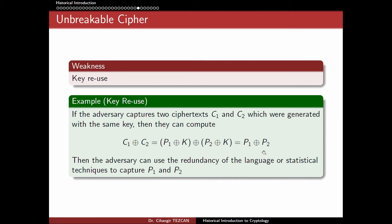The attacker who captures the two ciphertexts, if they XOR them, gets the XOR of the plaintexts. At this point, they don't know p1 or p2 individually, just their XOR. But since language contains redundancy, the adversary can use this redundancy and statistical techniques to recover some parts of p1 and p2, and sometimes the whole plaintexts.